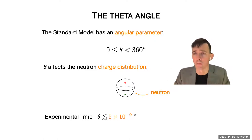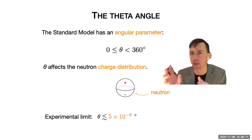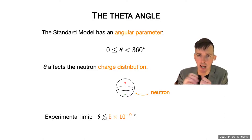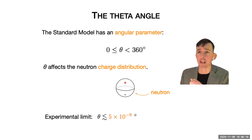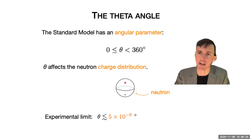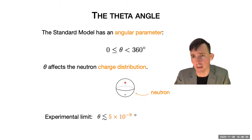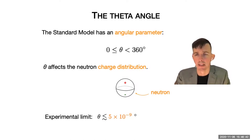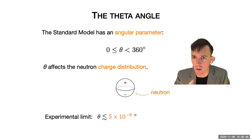This angle theta does one curious thing: it tweaks the charge distribution of the neutron. The neutron is a neutral particle, so it has electric charge zero. However, in principle, the charge distribution of the neutron can be a little bit asymmetric — it may have a little bit more positive charge on top and a little bit more negative charge at the bottom. This theta angle induces precisely such an asymmetry. Experiments over the past seven decades have searched for this asymmetry, but come up with nothing. The neutron charge distribution appears perfectly uniform, and this can be translated into a limit on theta.